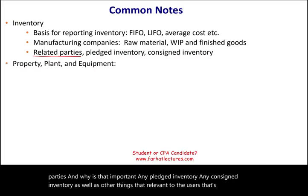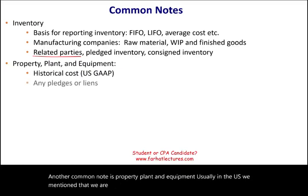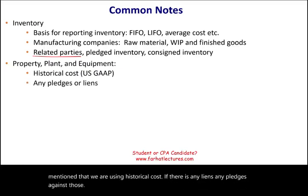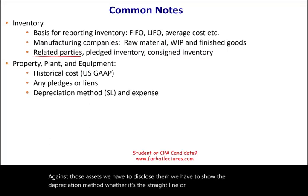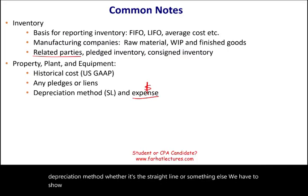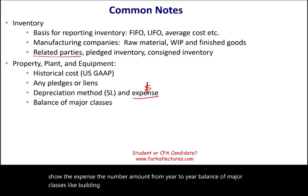Another common note is property, plant, and equipment. In the U.S. we use historical cost. If there are any liens or pledges against those assets, we have to disclose them. We have to show the depreciation method — whether it's straight-line or something else — the expense amount from year to year, and the balance of major classes such as buildings versus equipment versus warehouses.